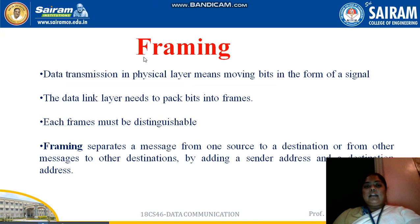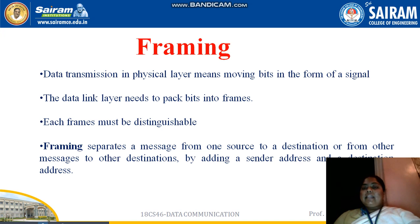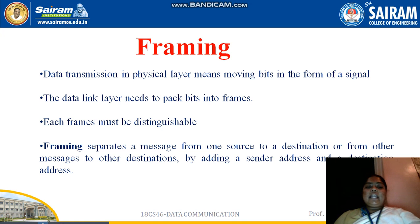Framing in the physical layer means moving bits in the form of signals. In the transmission medium, data cannot be sent in standard information format because computers and networks do not know the standard format of information. So the data is converted into signals — sequences of zeros and ones, representing true or false. The data link layer then packs these bits into frames.